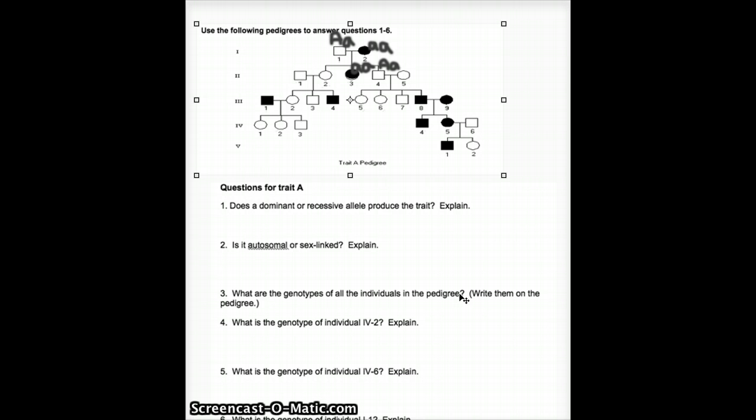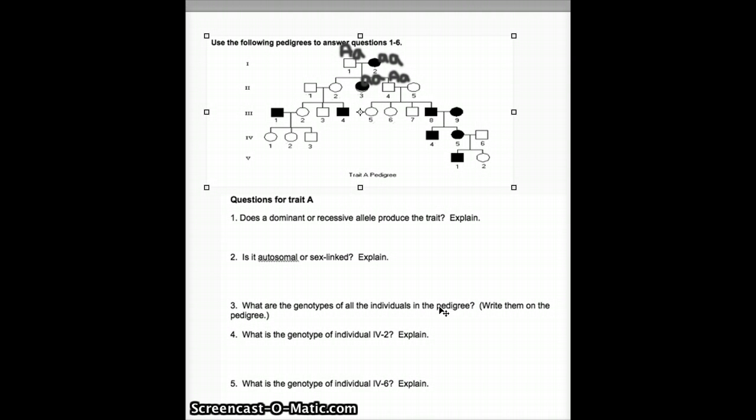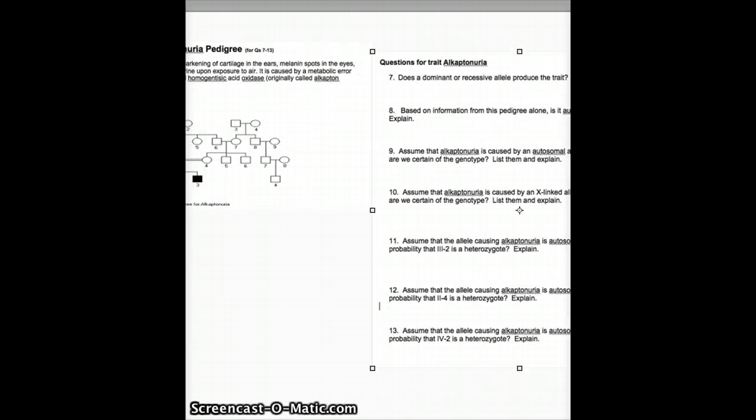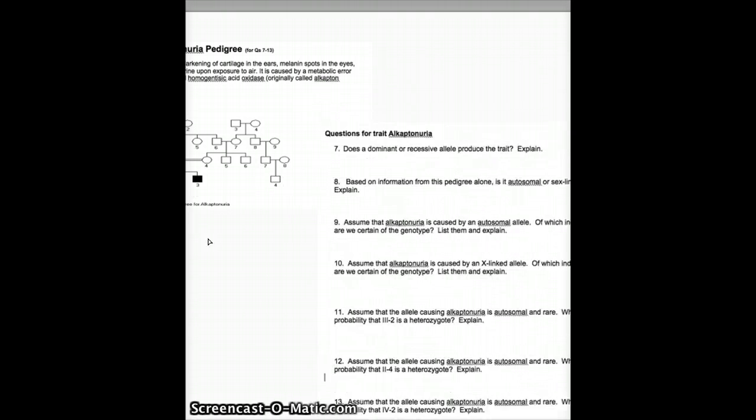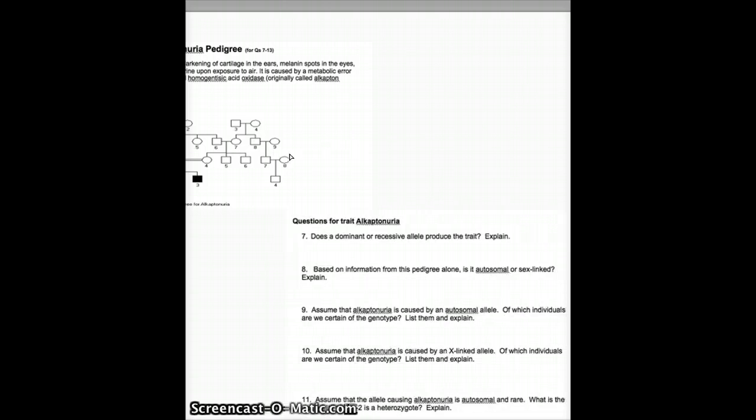And then the last question is, what is the genotype of individual 1-1? And again, we already figured that out. We figured out that he was heterozygous because he had a child that has the trait in question. Now, let's switch to our next part of the worksheet, which is the alcaptoneuria questions.